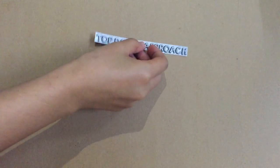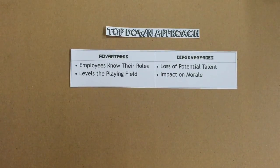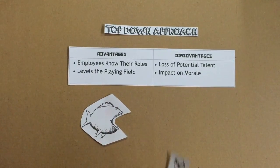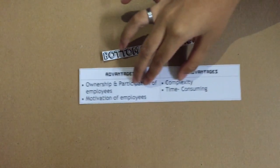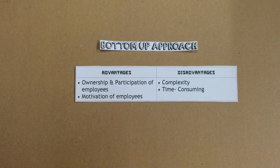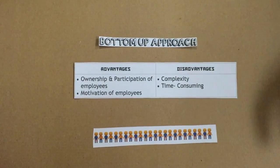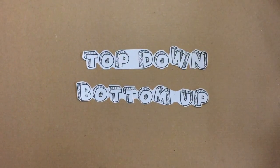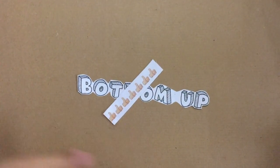Now, let's look at the advantages and disadvantages of each approach. For top-down, the advantage is that employees know their role, which levels the playing field. The disadvantages are loss of potential talent and negative impact on morale. For bottom-up, the advantages are employee ownership, participation, and motivation. The disadvantages are complexity and being time-consuming. In conclusion, comparing both approaches, bottom-up is the better approach for decision-making in a management organization.